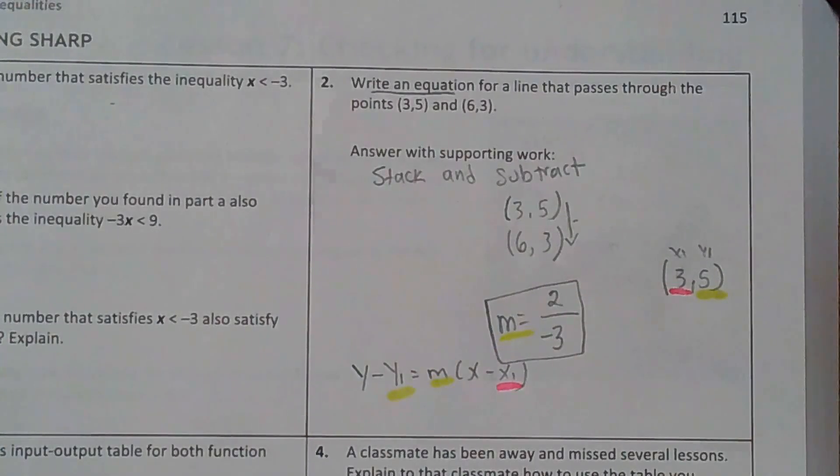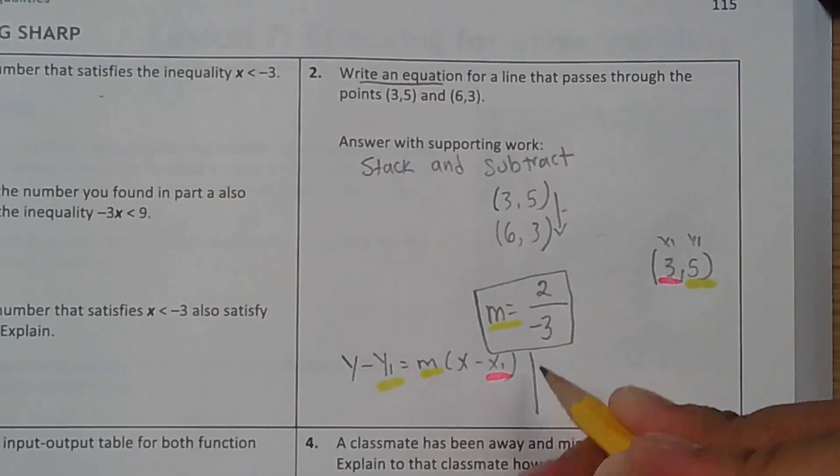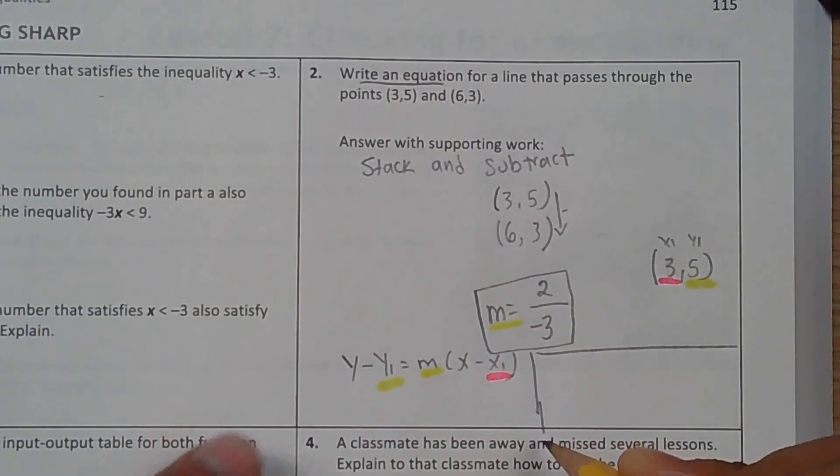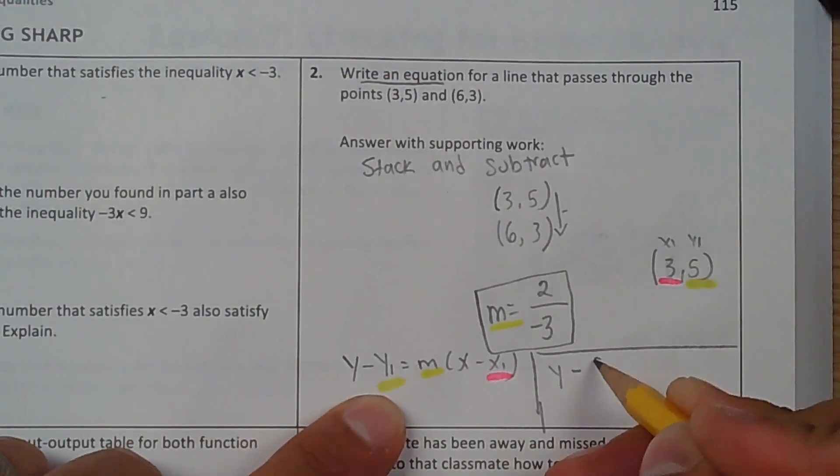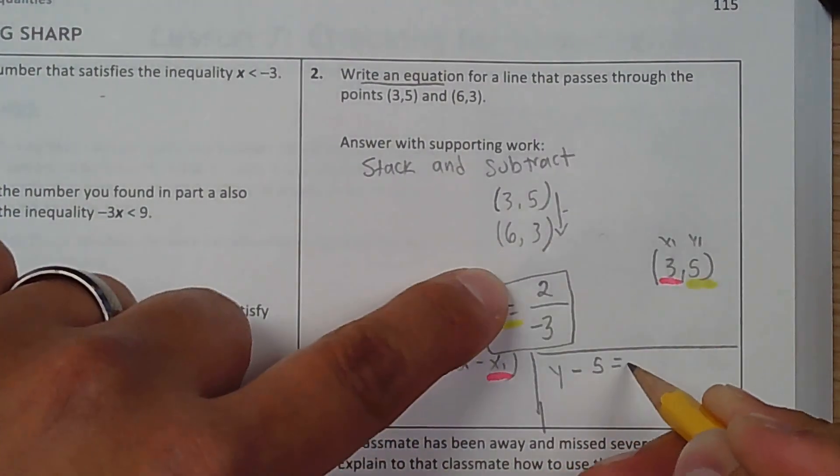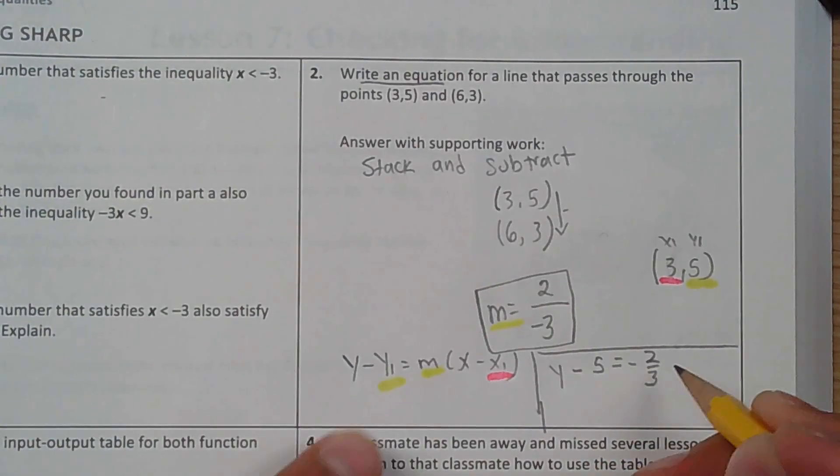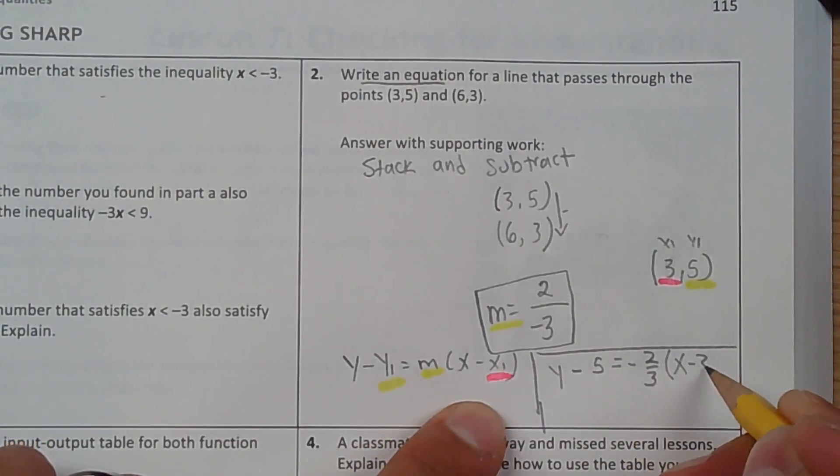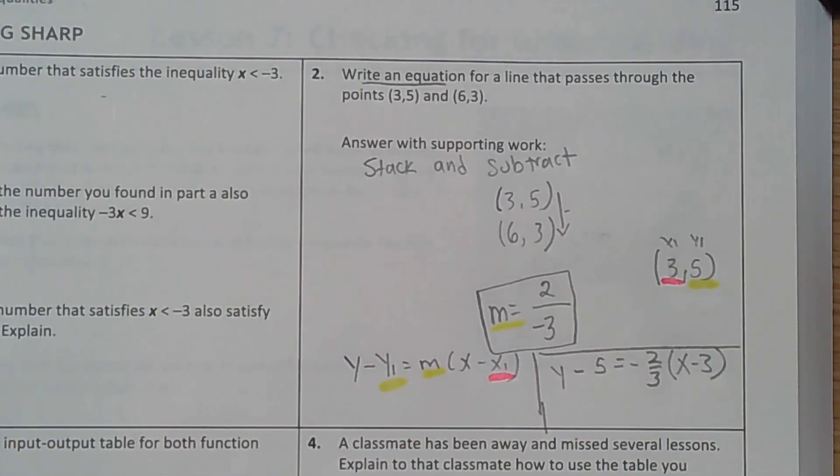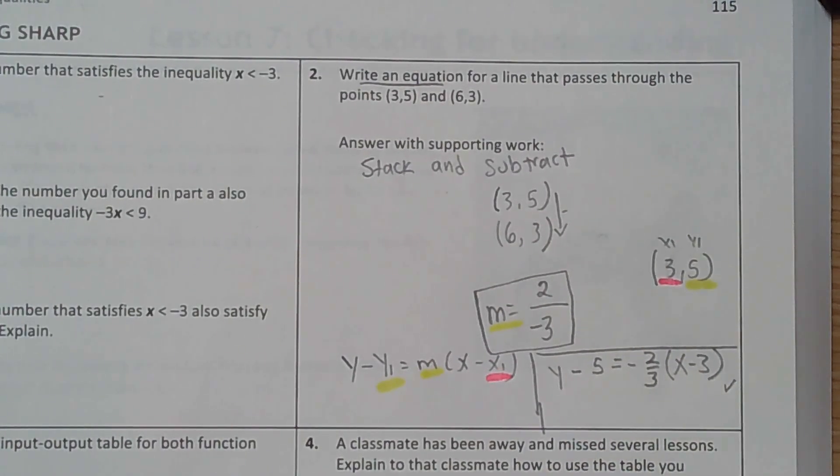So I just have to substitute, and I should have the equation written in point-slope. y minus 5 equals negative 2 over 3 times x minus 3. And that is the equation in point-slope. Thank you guys for watching. I'll see you in the next video.